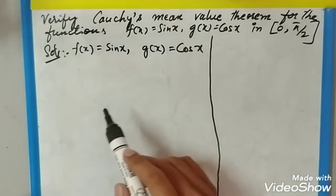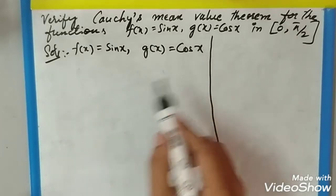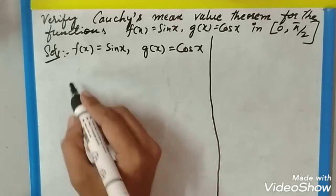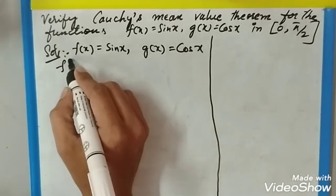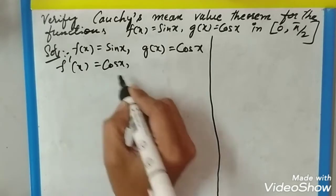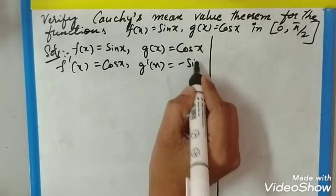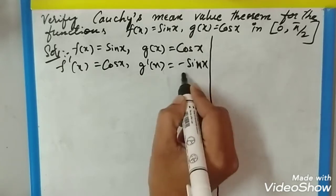Let us take the solution. Here f(x) = sin x and g(x) = cos x. First we need to differentiate. f'(x) = cos x and the derivative of cos is g'(x) = -sin x.